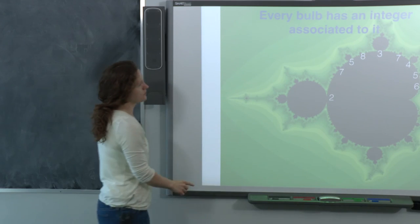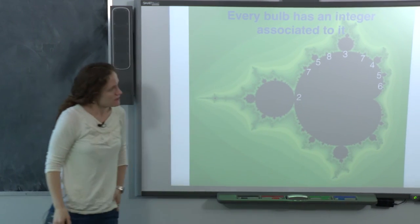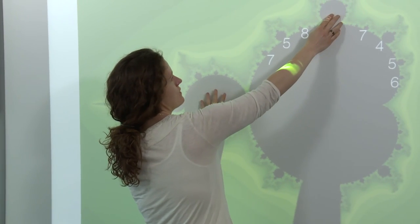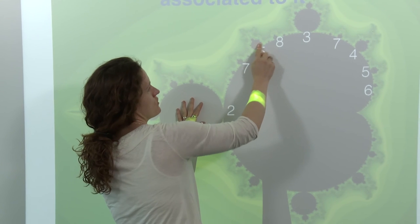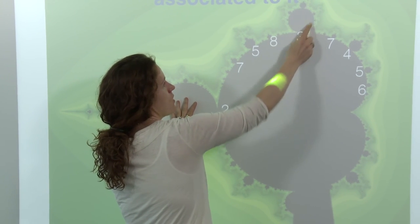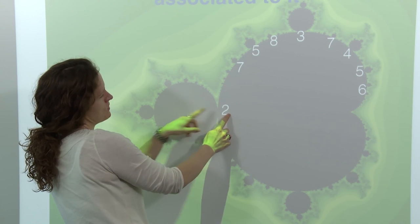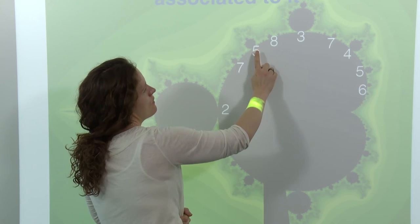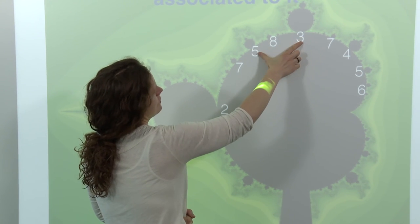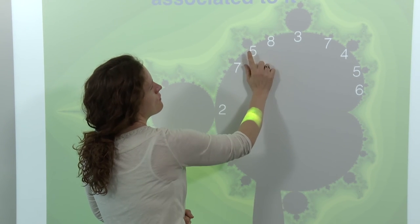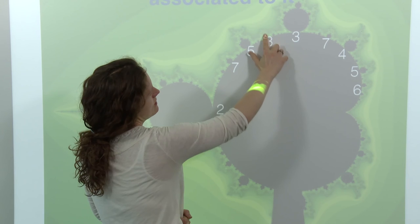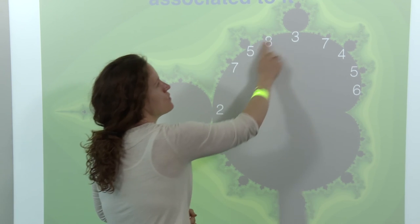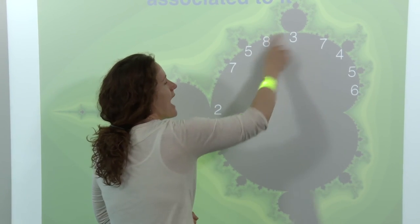There are those integers associated to the bulbs. Looking at the bulb with integer 3 and the bulb with integer 2, between these two bulbs the next largest one has integer 3 plus 2 equals 5. Then 5 plus 3 gives the integer for the next largest between them, which is 8. Then 8 plus 5 is 13, the integer for the next bulb. So the Fibonacci sequence is hiding in the Mandelbrot set.